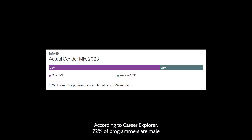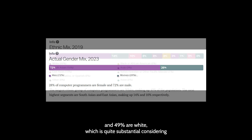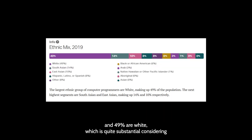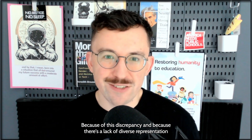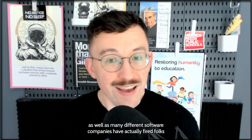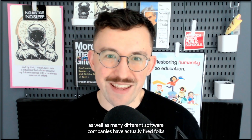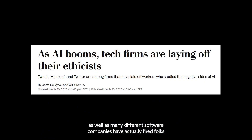According to Career Explorer, 72% of programmers are male and 49% are white, which is quite substantial considering that only 8% of programmers identify as Hispanic and 6% identify as Black. Because of this discrepancy and lack of diverse representation, as well as the fact that many software companies have actually fired folks for being AI ethicists, there's not a lot of oversight here.